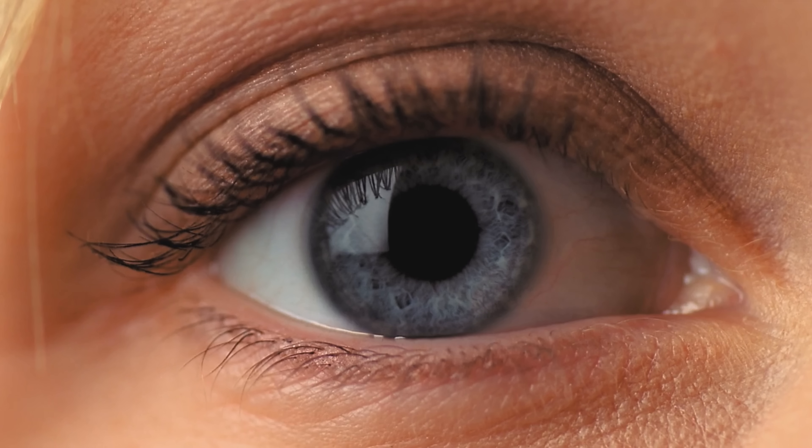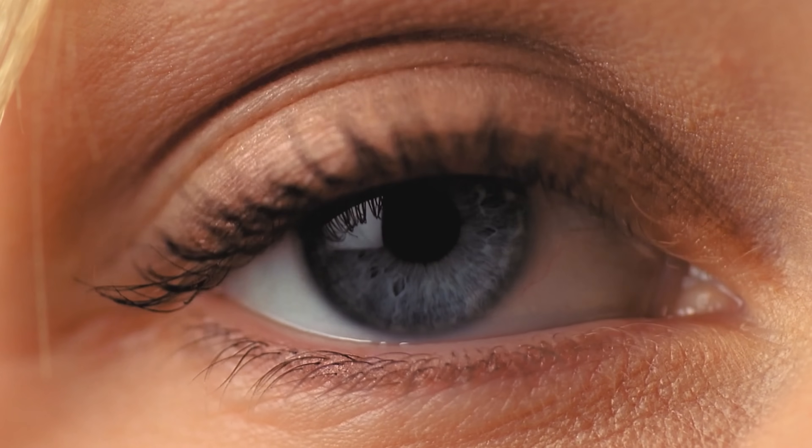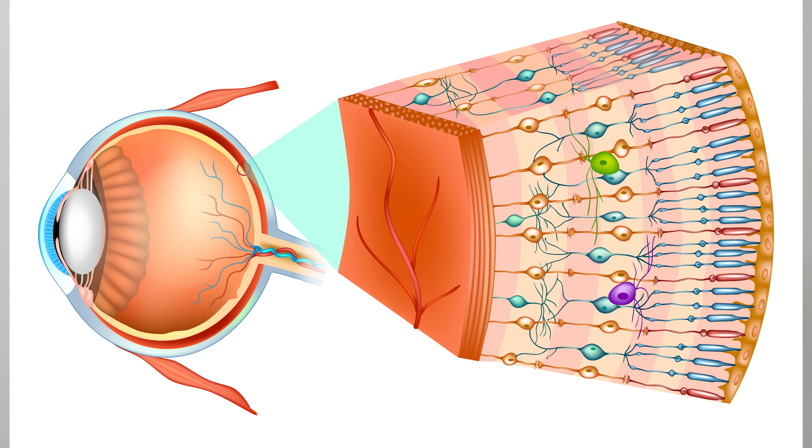Hey everyone, today I'm going to be showing you how to see inside of your own eye. The weird thing about how our eye is built is the retina — the place where we receive incoming light and turn it into a nerve signal — is at the very back of our eye. The blood supply for the retina is actually right on top of it, so you basically have veins and arteries right in front of the place where we detect all of our vision.